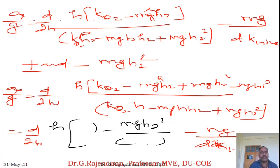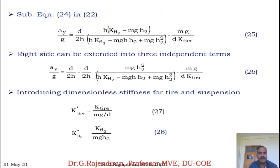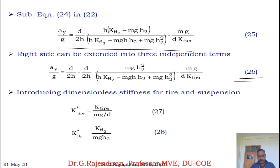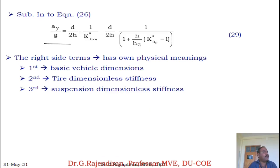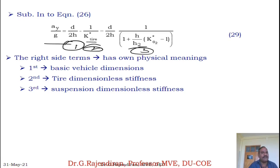This equation is derived for four cases: Case 1 — suspension and tyre both infinitely stiff, giving Ay/G equals D/2H (rigid body model). Case 2 — rigid suspension with flexible tyre, only tyre deflection terms apply. Case 3 — rigid tyre with flexible suspension, only suspension terms apply. Case 4 — both tyre and suspension are flexible, giving the full three-term equation.